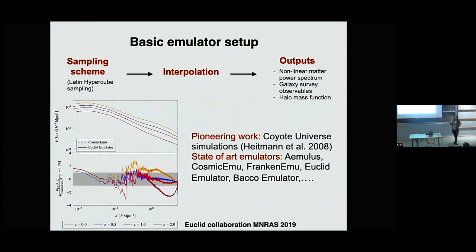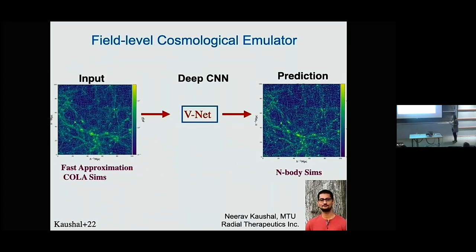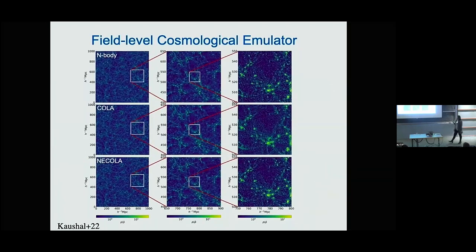The question is: can we use a new tool to generate high-resolution simulations that are also less computationally expensive? Can we use machine learning to do that? This is what we did with my PhD student Imran Qureshi at Michigan Tech. Together with him and Francisco Villaescusa-Navarro, we took fast approximate COLA simulations as input and predicted N-body simulations using a convolutional neural network — specifically a V-Net. We call this model N-COLA.